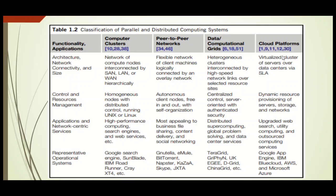The fourth type is cloud platforms. They use many servers in data centers connected via service level agreements, and they support web search, utility computing, and outsourced services. Examples include Google App Engine, IBM Cloud, AWS, and Microsoft Azure.